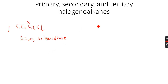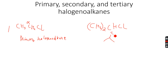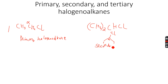If you have, for example, CH3CHClCH3 — I'll draw the skeletal formula to make it easier — this carbon atom is attached to two CH3 groups. This is the alpha carbon atom, and you can see it is attached to two different carbon atoms, so this is called a secondary halogenoalkane.